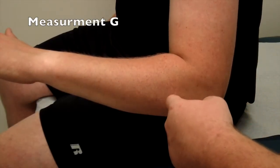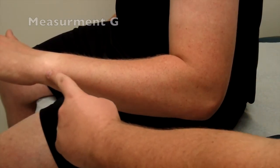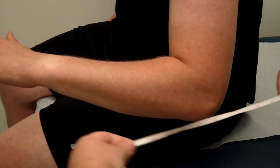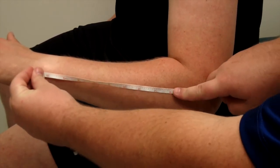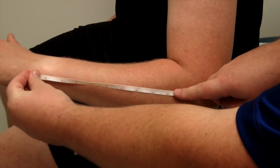Measurement G. Locate the crease on the forearm created by the contact between the bicep and forearm when the arm is flexed. Now locate the ulnar styloid. Measure the distance between these two points.